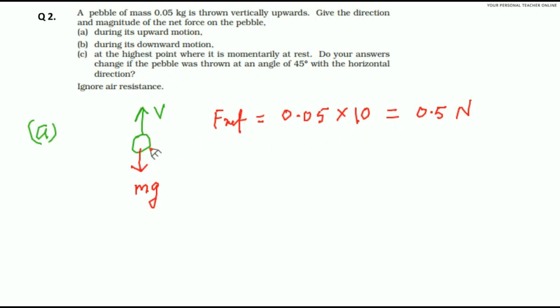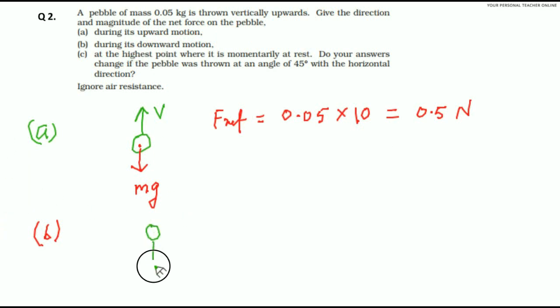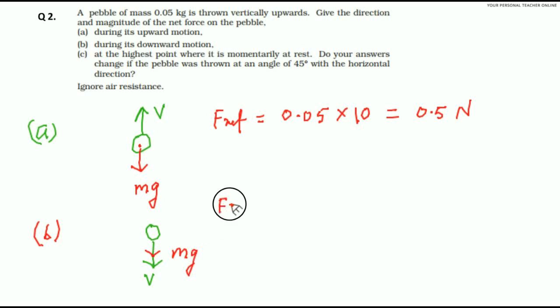Net force on the pebble is in the downward direction. Part B: during its downward motion. Suppose the pebble is now coming in the downward direction. In this case also, net force will act only as mg, that is in the downward direction. Either the pebble goes upward or downward, always g acts in the downward direction. So, in the second case also, net force will be 0.5 Newton.